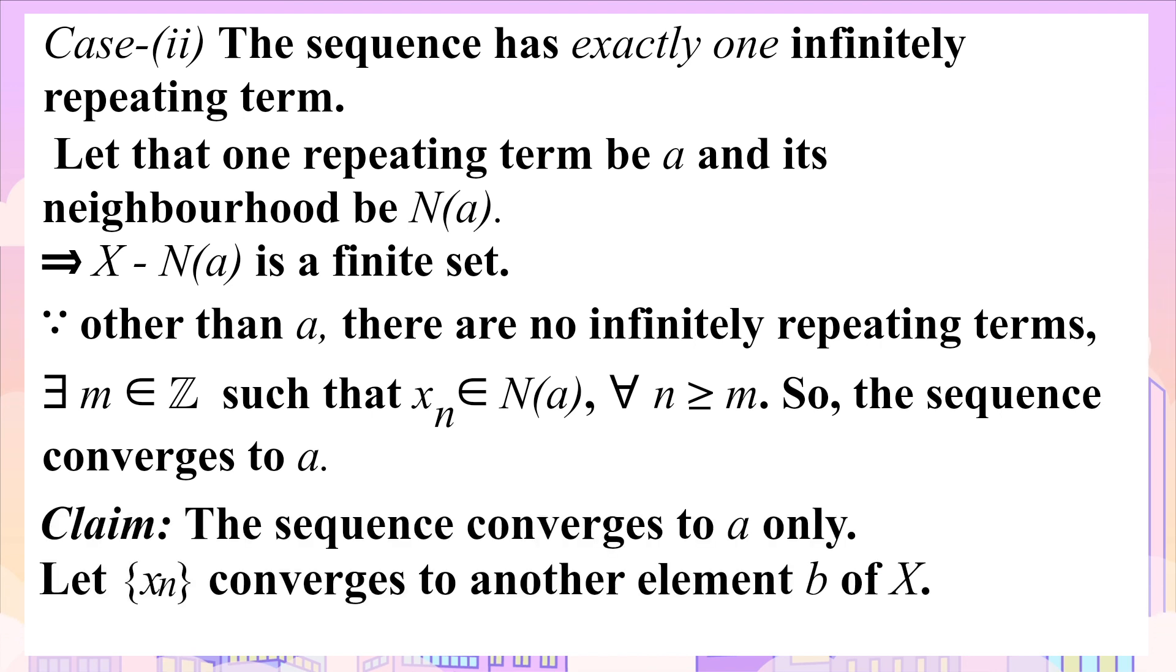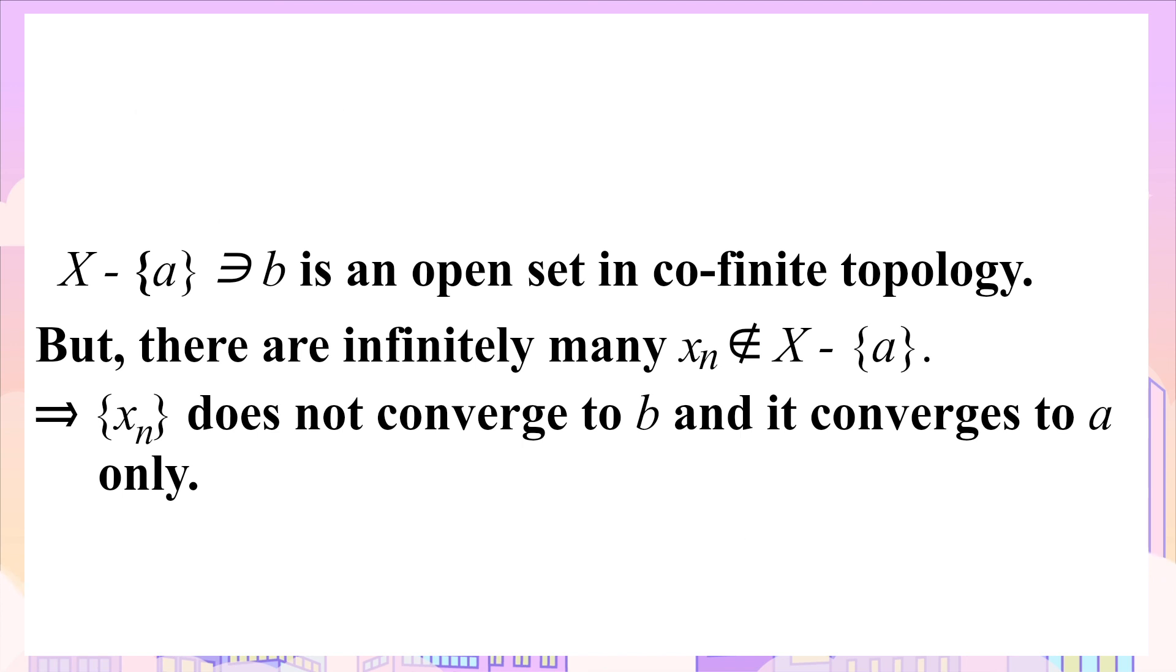We claim that the sequence converges to a only. In order to prove the uniqueness, let {xₙ} converges to another element b of X. As the complement of singleton {b} containing a is an open set in co-finite topology, but there are infinitely many terms of the sequence {xₙ} which are not in that open set. So the sequence {xₙ} doesn't converge to b.